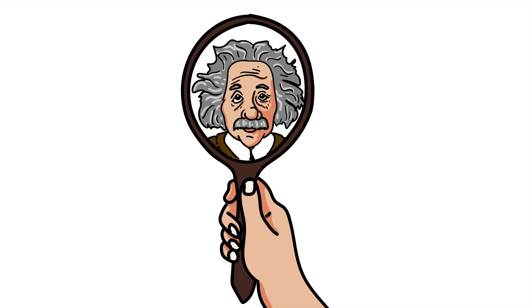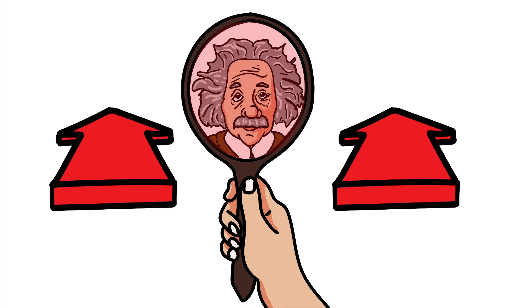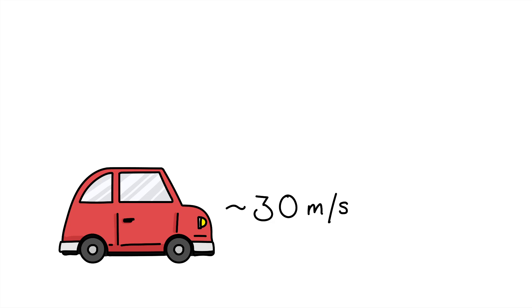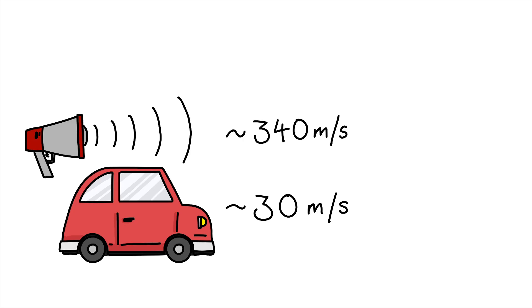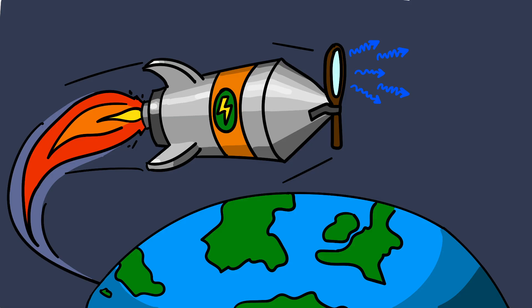The same thing happens with light. If a mirror moves towards you, light is reflected bluer, and if it moves away from you, the light becomes redder. However, this effect is only noticeable when the speed of the object is similar to the speed of the waves. And since light travels so much faster than sound, you won't see your reflection change color unless your mirror can move as fast as light.